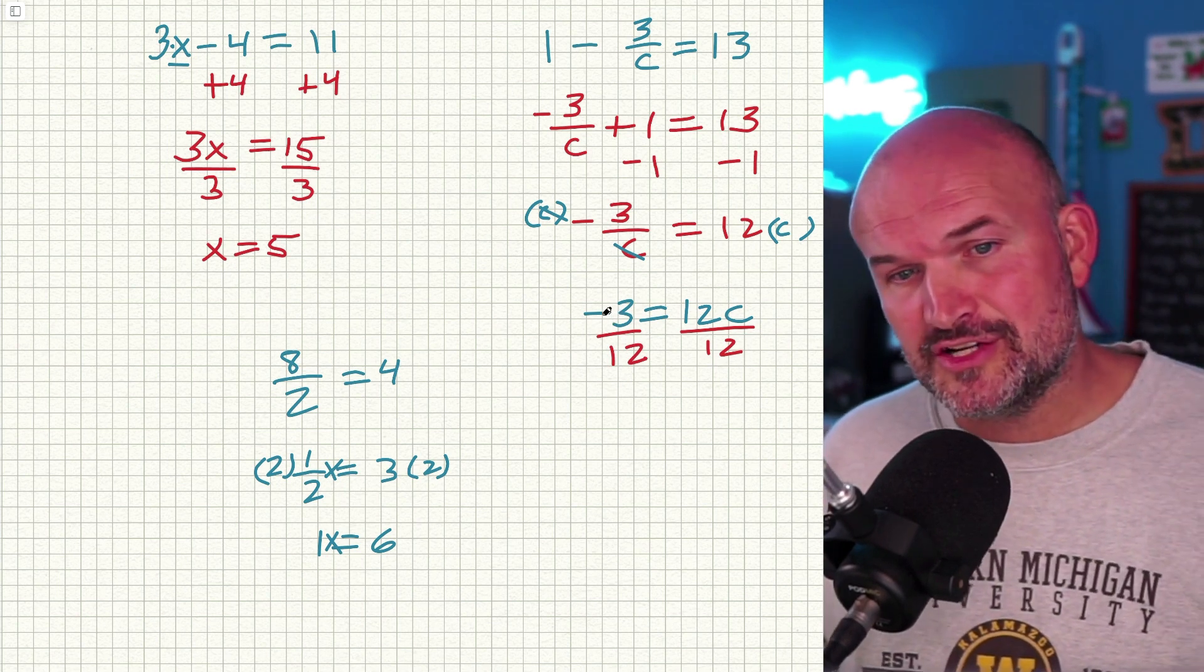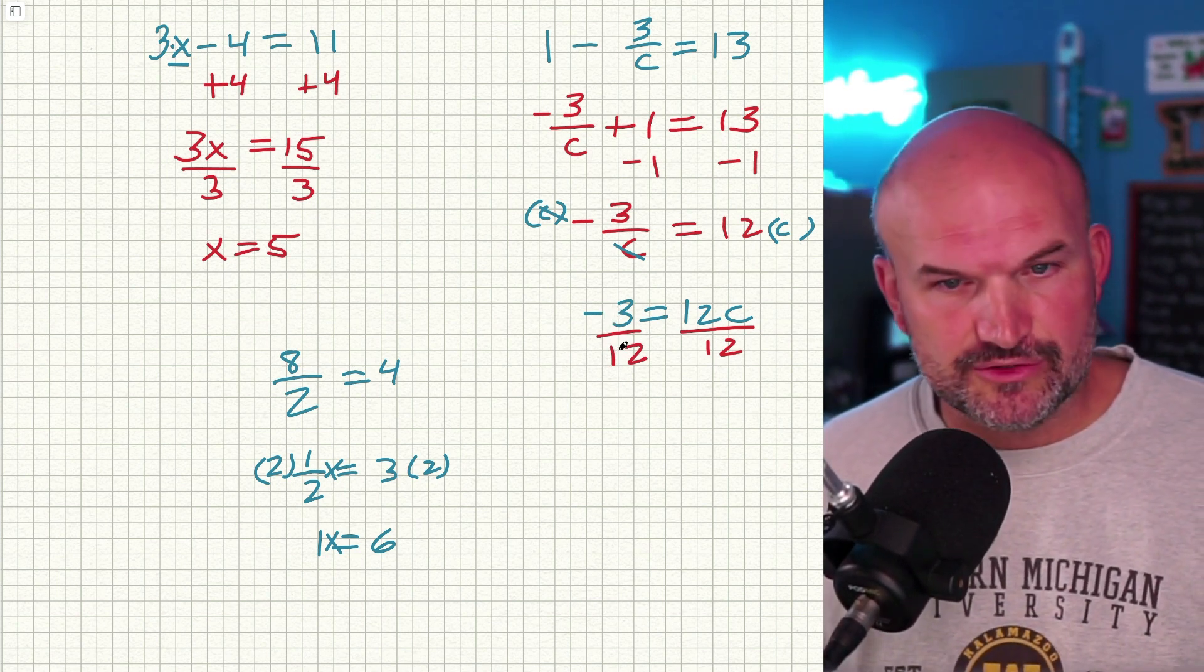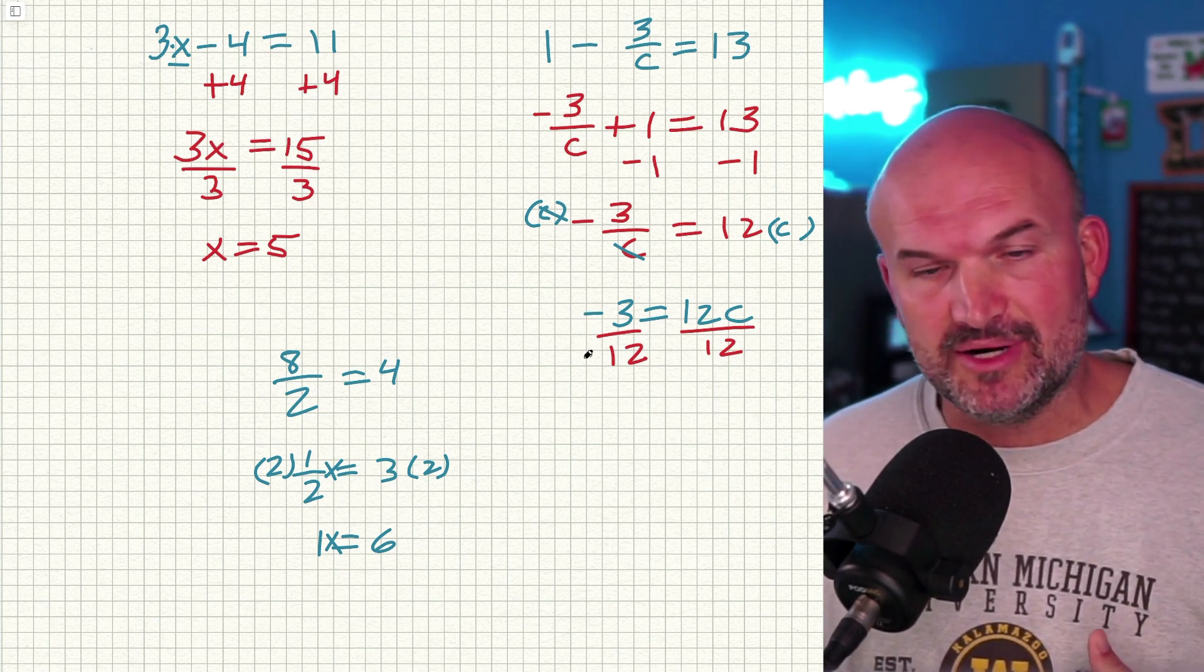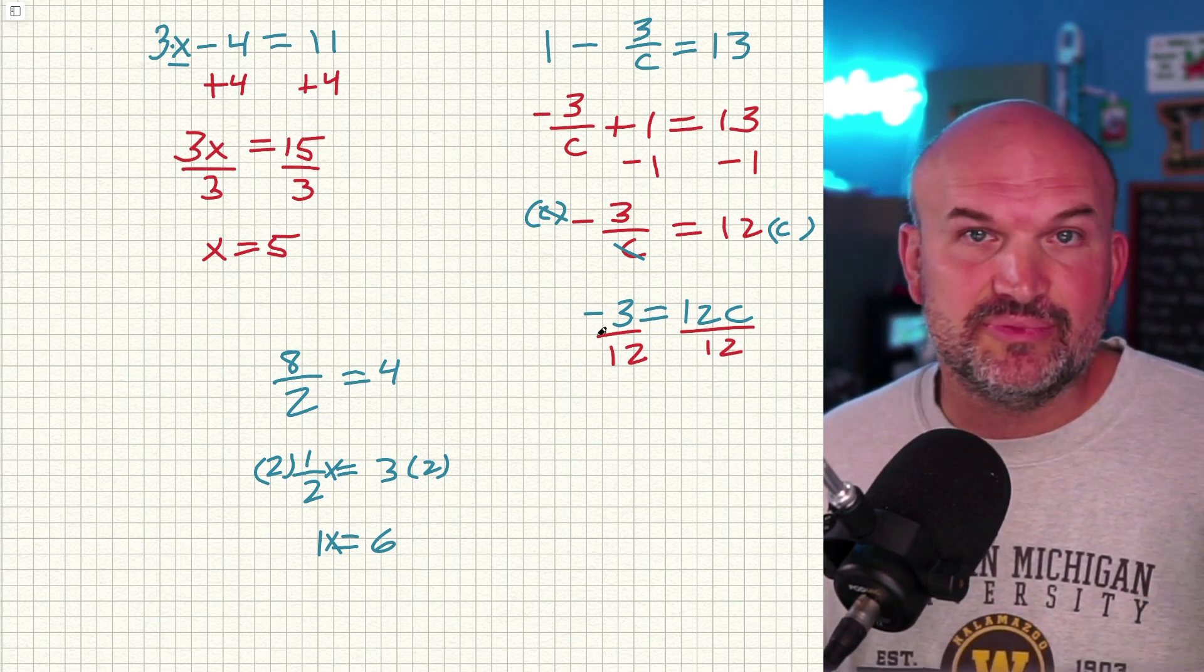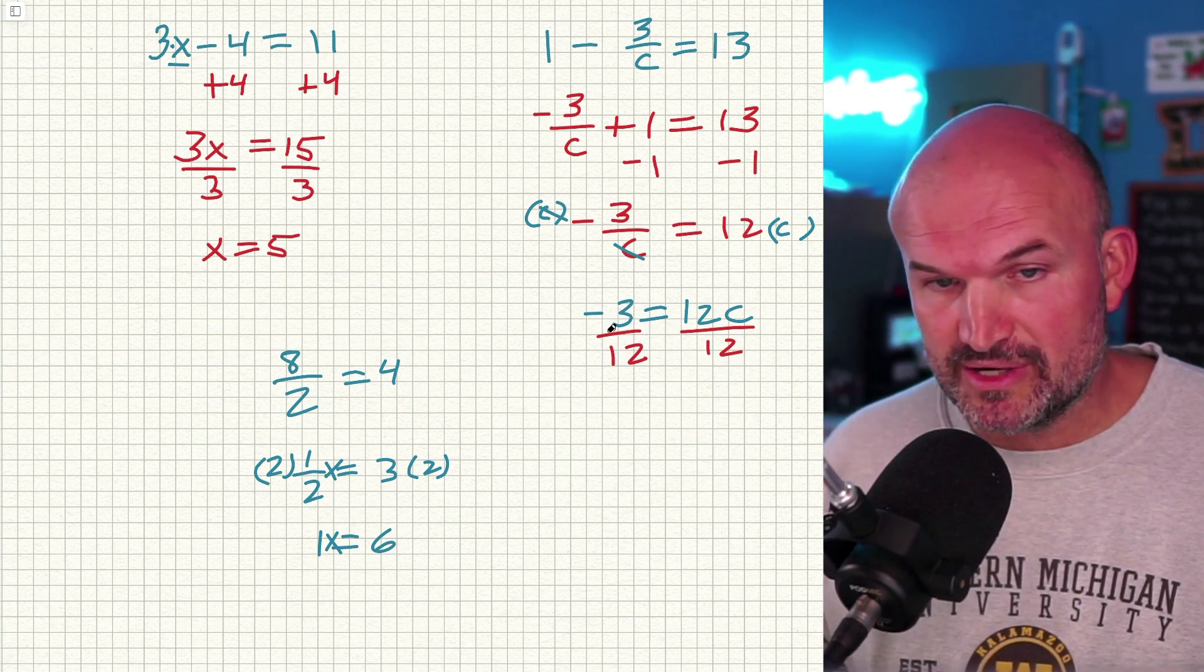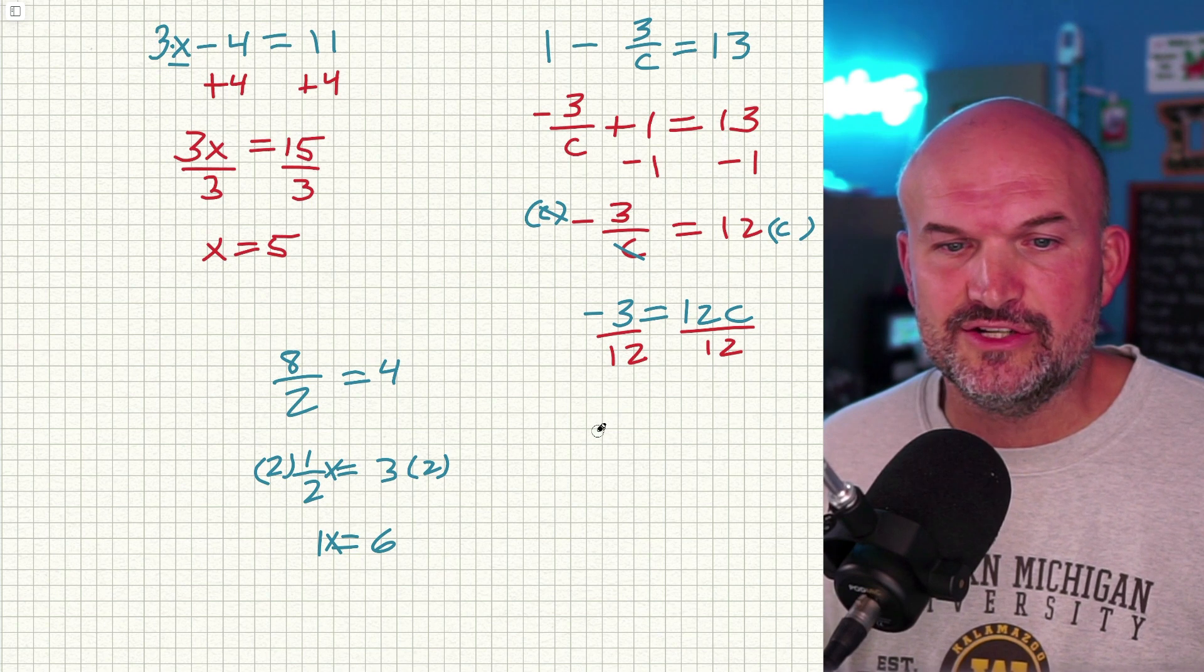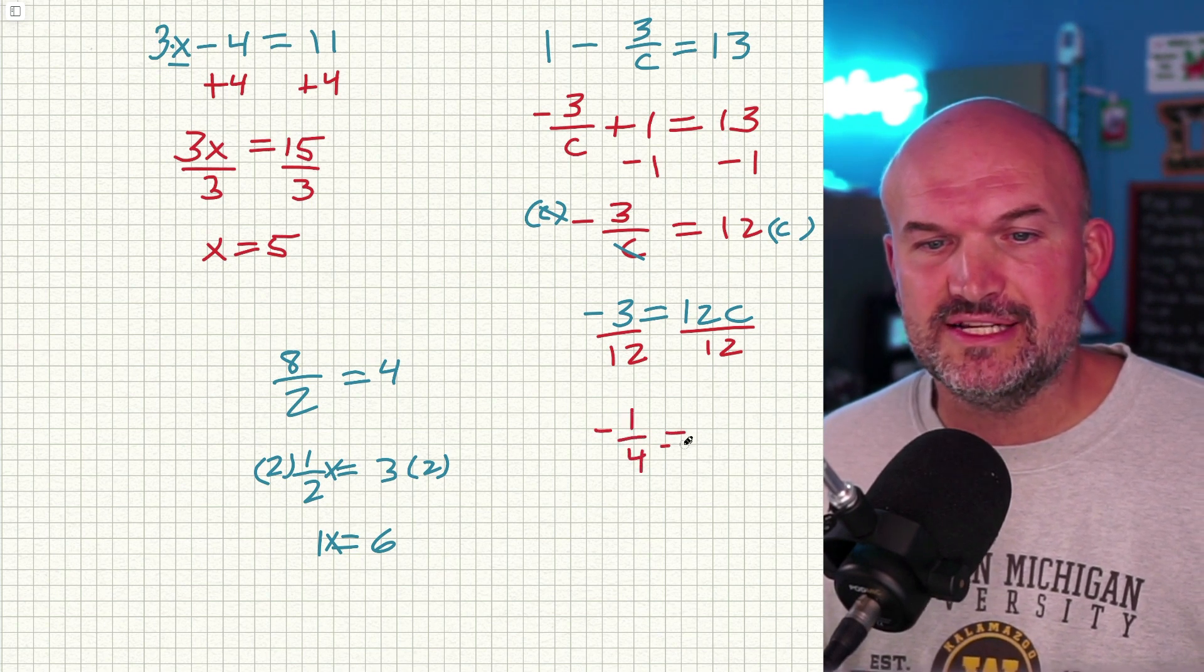Now I am going to have a fraction, -3 ÷ 12. And we just want to make sure we can reduce that. What can we divide the top, the numerator and the denominator by the same number to reduce this? Hopefully you recognize that three and 12 are both divisible by three. So if I divide three and 12 by three, that can reduce to -1/4 = C.